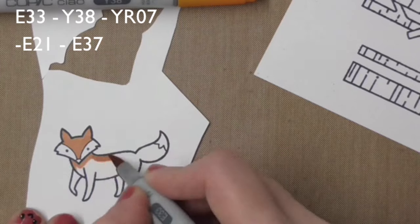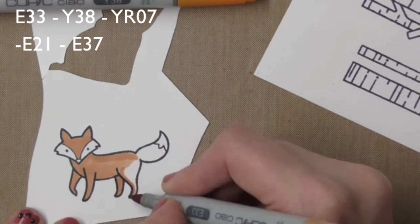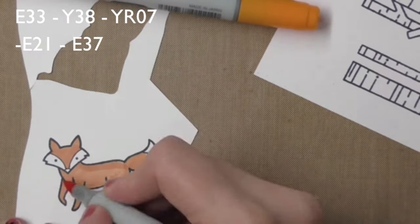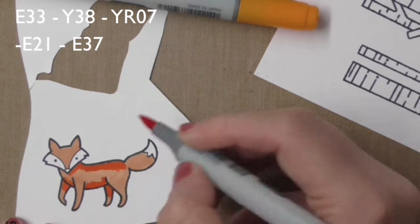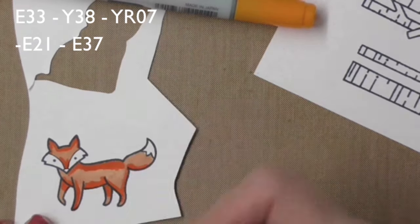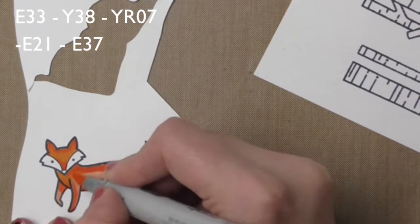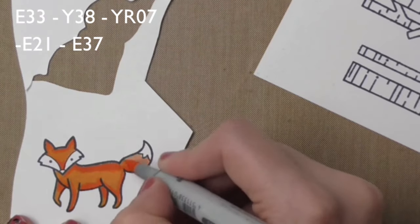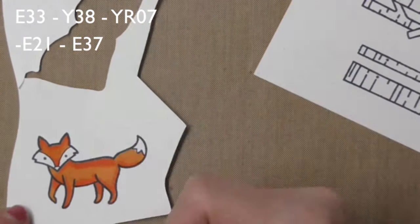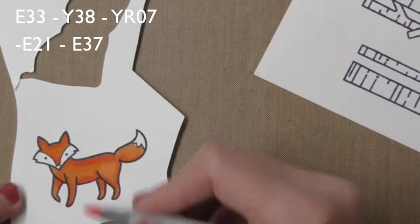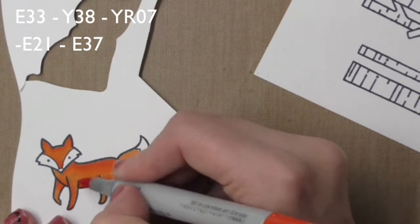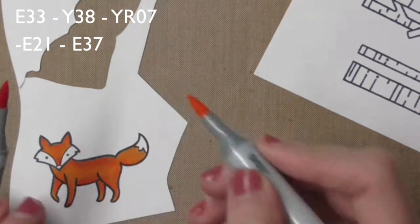Back on to foxy. I've sped up this video because it's very easy coloring and I am no expert but I'm using colors E33, Y38, YR07 and then E21 and E27 as well. And I've added the numbers to the top of the screen there so you can see them for yourself.